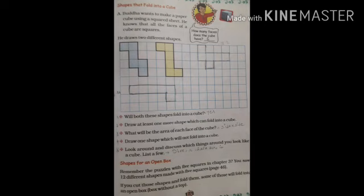Shapes for an open box: remember the puzzle with five squares in chapter 3? You saw 12 different shapes made with five squares on page number 46. If you cut those shapes and fold them, some of those will fold into an open box - a box without a top. So the remaining things we will discuss later. Thank you.